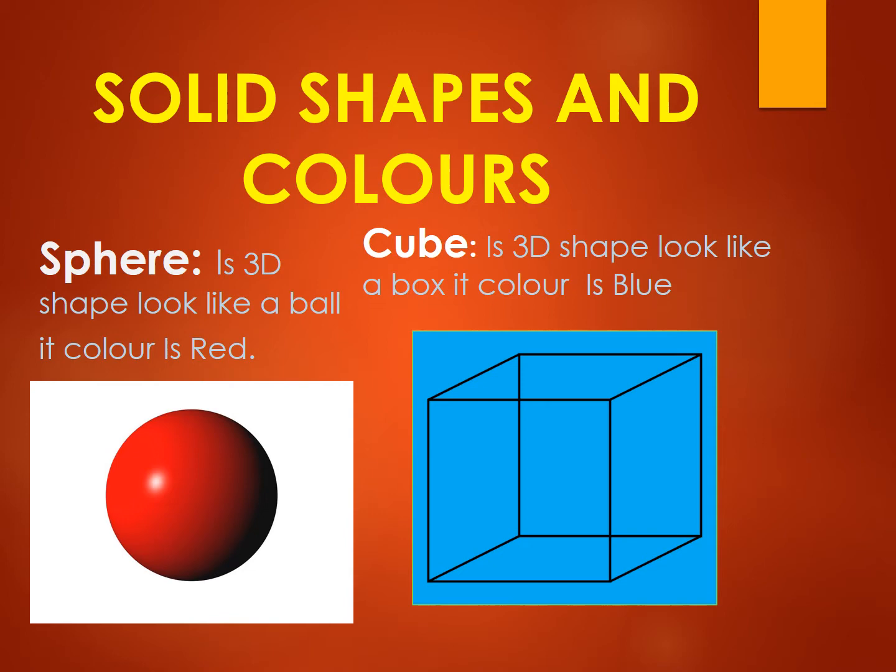Sphere is 3D shape look like a ball. Its color is red. Cube is 3D shape look like a box. Its color is blue.